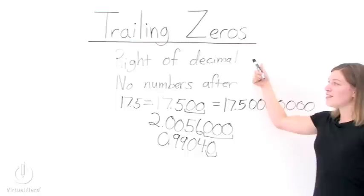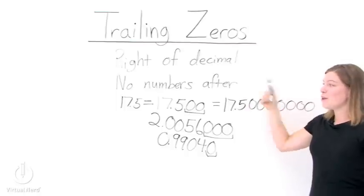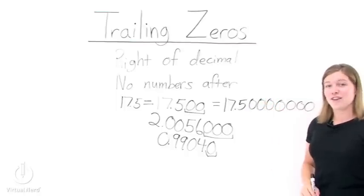So trailing zeros are just zeros to the right of the decimal with no numbers after them. And they do not change the value of the number.